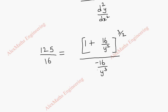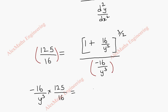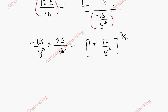We cross multiply: the entire denominator term goes to the left side. So minus 16 by y cubed into 125 by 16 equals (1 plus 16 by y squared) to the power 3/2. We can cancel the 16s, and the left side becomes minus 5 cubed by y cubed.